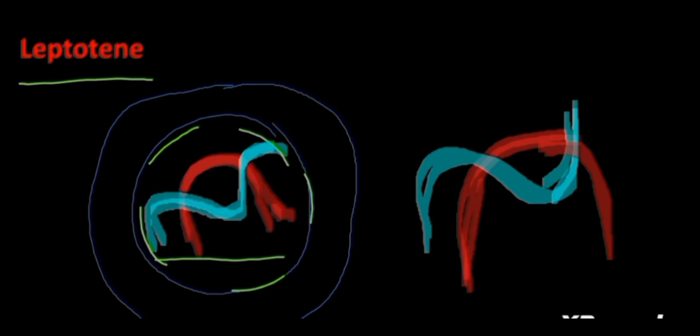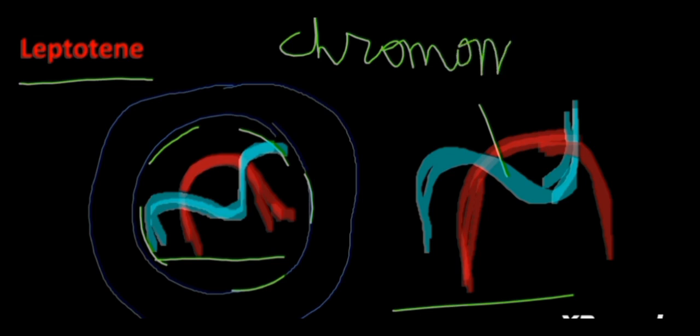Secondly, the homologous chromosomes start getting close to each other and form a link to each other at a point which we call chromomere, and this is the shortest stage of prophase I.